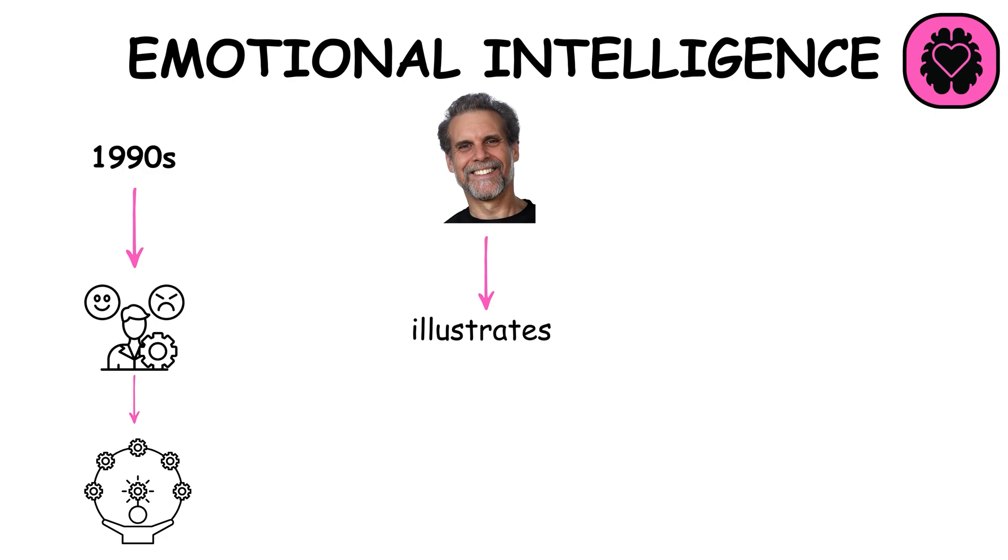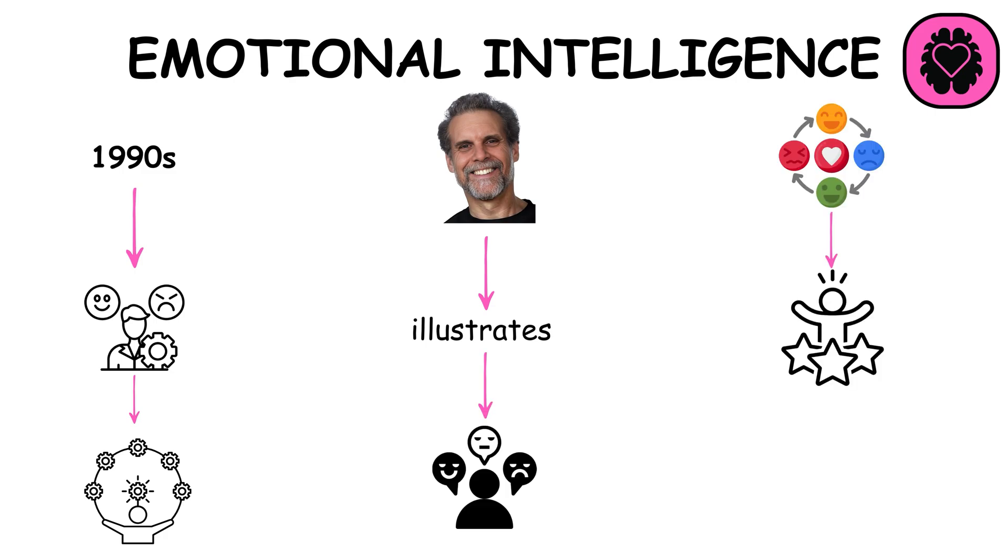Emotional intelligence, emerging in the 1990s, recognizes the ability to understand and manage emotions as key to human behavior. Daniel Goleman's work illustrates how emotional skills affect social relationships and personal success beyond traditional cognitive intelligence.